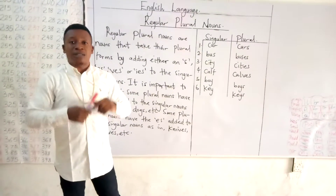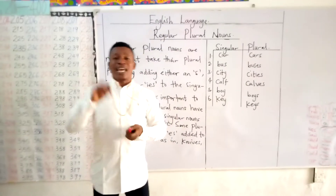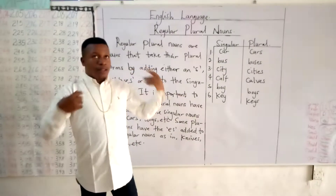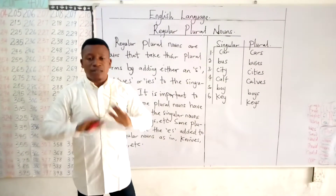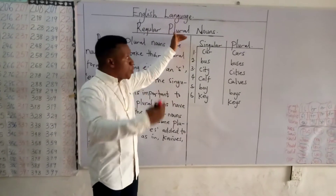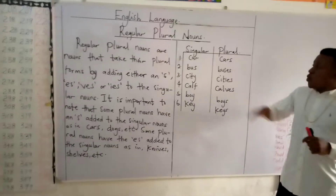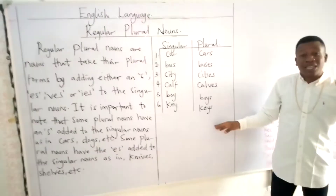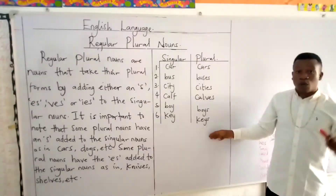Now coming down to what a noun is — we all know that a noun is a name word. Cars, baby, toy — whatever you give a name to is a noun. Now for us to understand what this topic is, regular plural nouns, I would like us to go to this section of the board. Remember that we are dealing with countable nouns, nouns that can be counted, and we classify them as regular plural nouns.